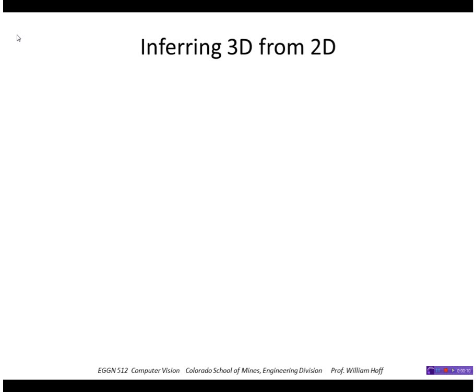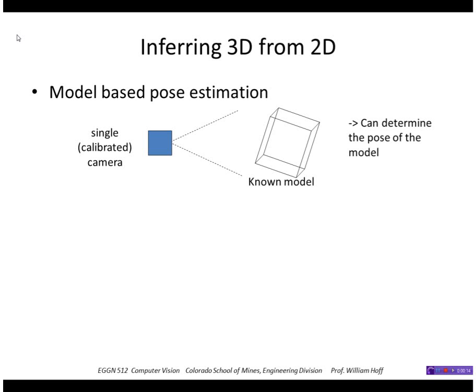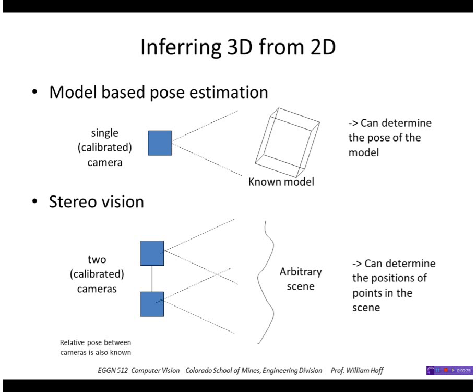We can get 3D information from 2D images in several ways. If we have a single calibrated camera and a model where we know the geometry, we can determine the pose of the camera with respect to the model, called model-based pose estimation.